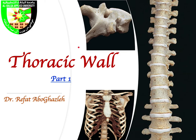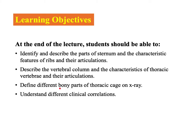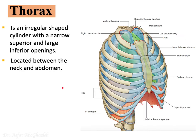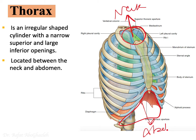Welcome everyone to another lecture in anatomy. Today I would like to talk about the anatomy of the thoracic wall in two parts. Let us define the thorax — it is an irregular shaped cylinder with a narrow superior opening and a large inferior opening, connecting the thoracic cavity with the neck above and the abdomen below.